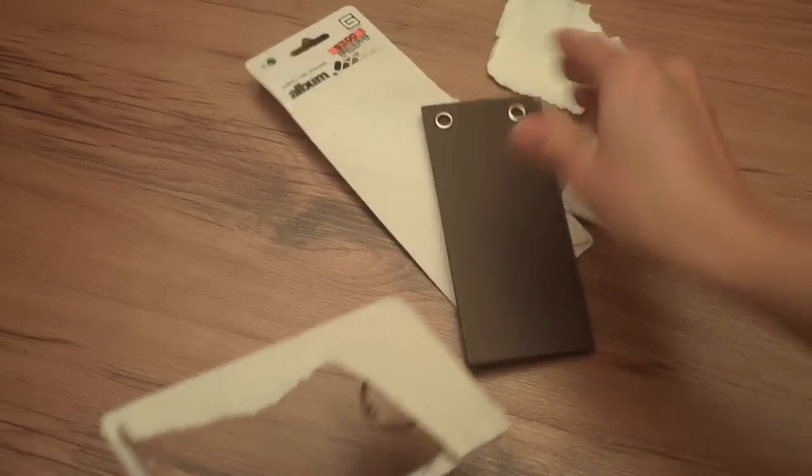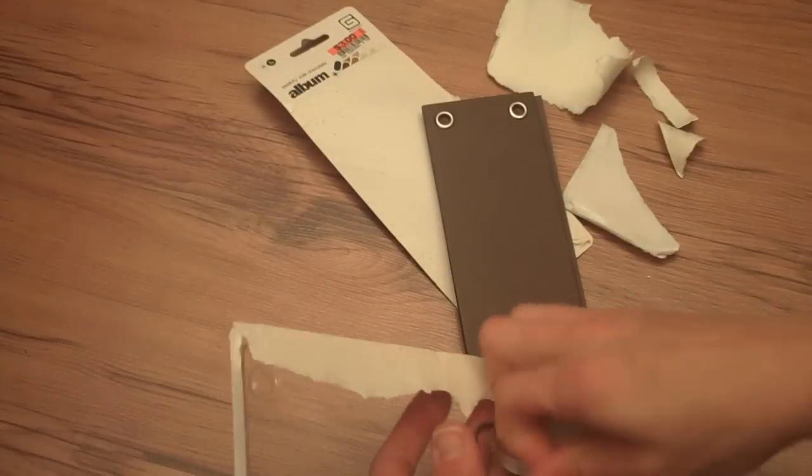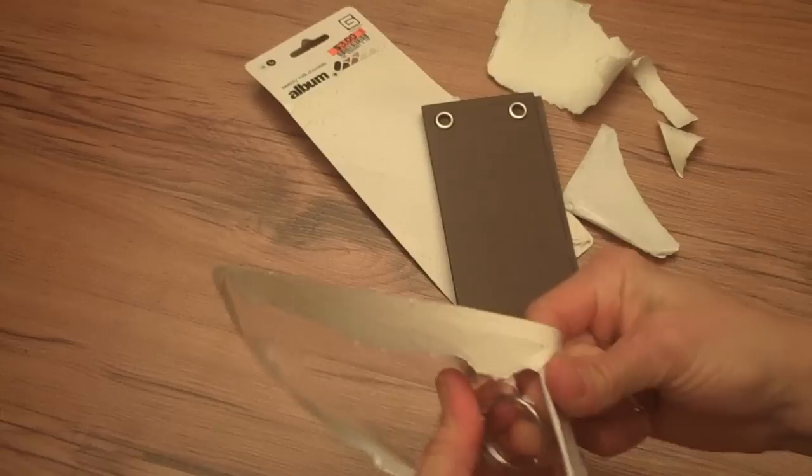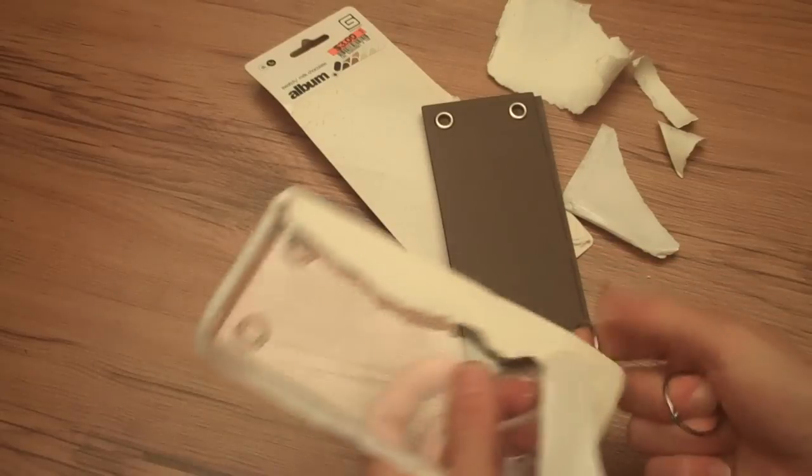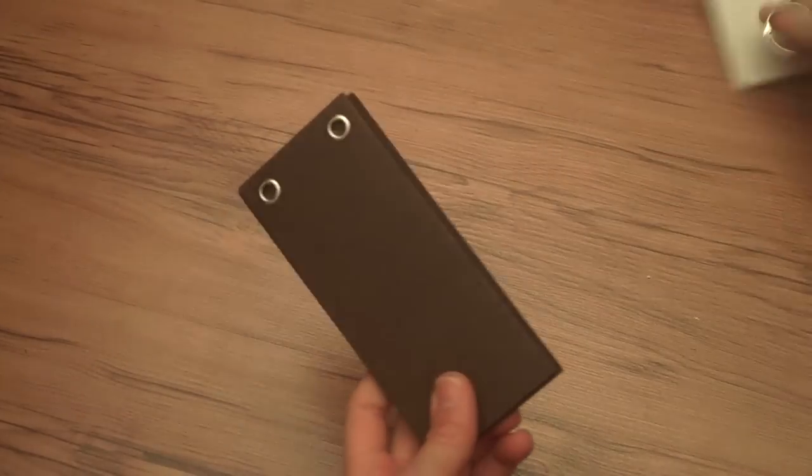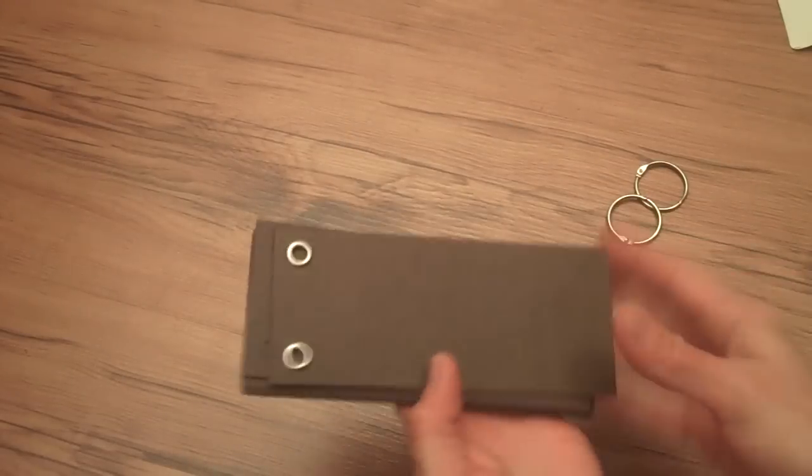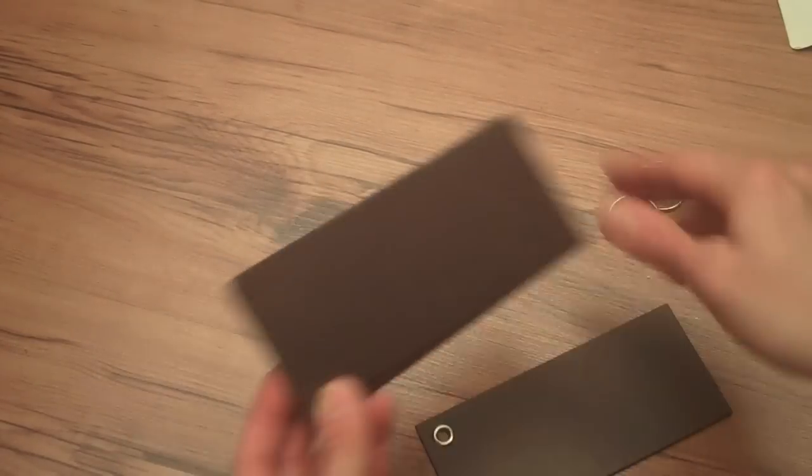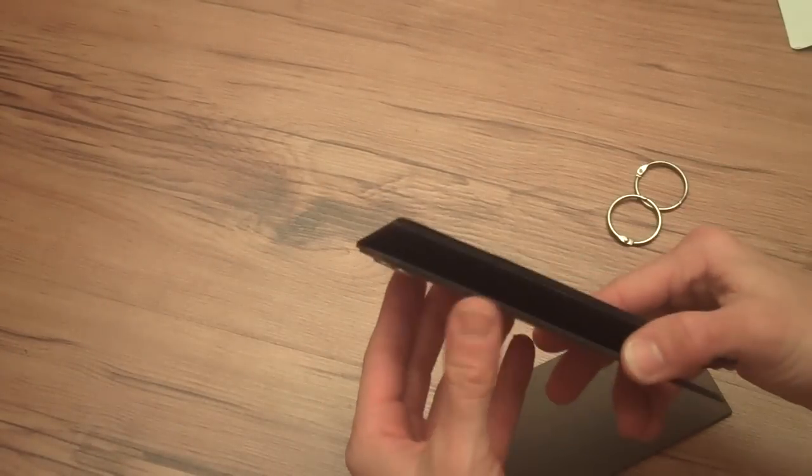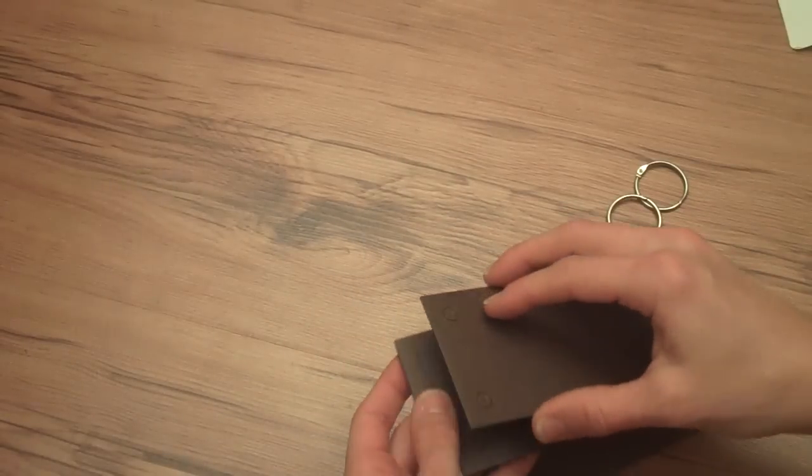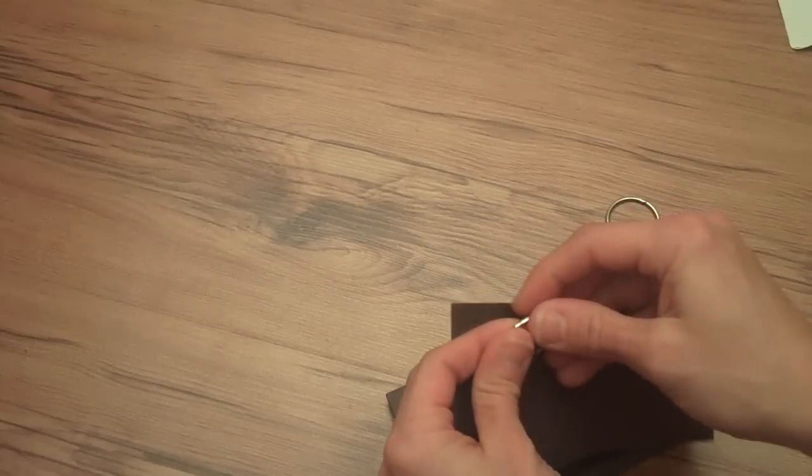It comes with the little rings and everything. The front and the back covers have the little grommets and then the pages inside, you have to just poke out the little holes there and you can put your rings through there.